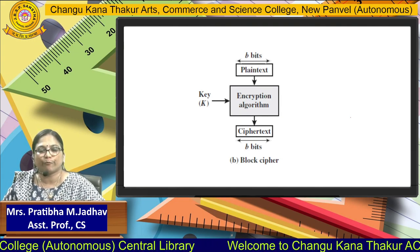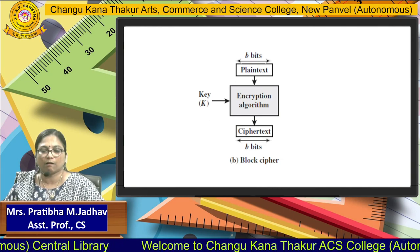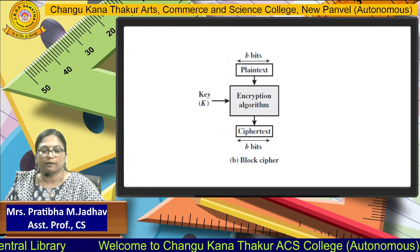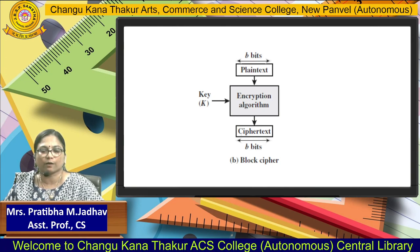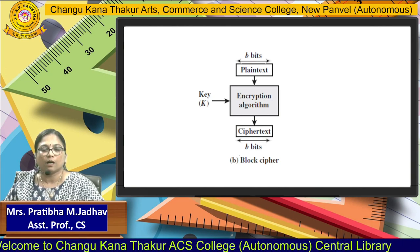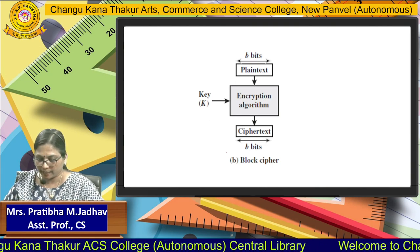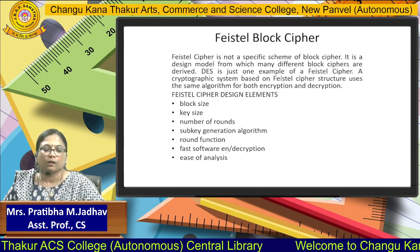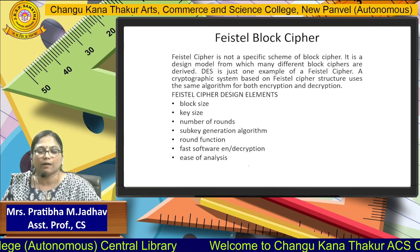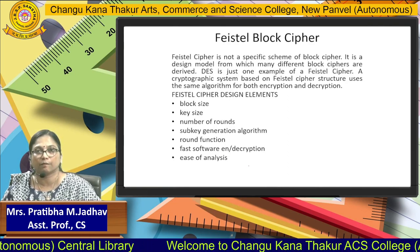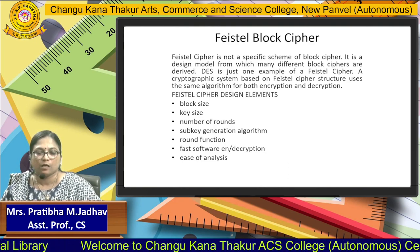This is the diagram of block cipher. The plain text is going to be converted into the cipher text, and for that plain text we are going to apply one encryption algorithm with the secret key K. When we are considering the Data Encryption Standard, it is following the structure of the Feistel block cipher.